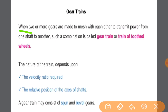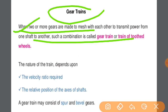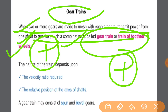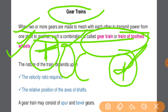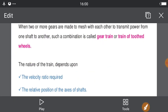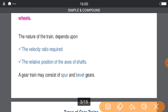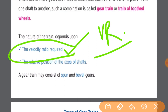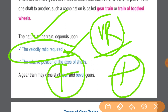When two or more gears are made to mesh with each other to transmit power from one shaft to another shaft, such a combination of gears is called a Gear Train or toothed wheels. The nature of the train is decided according to the velocity ratio required and according to the relative position of the axis of the shafts.